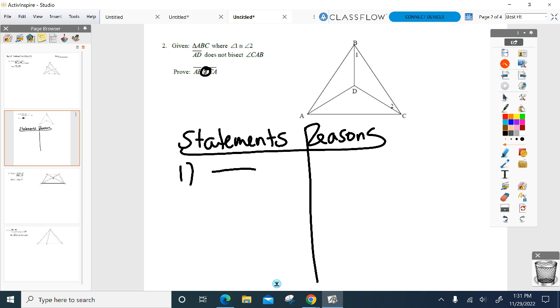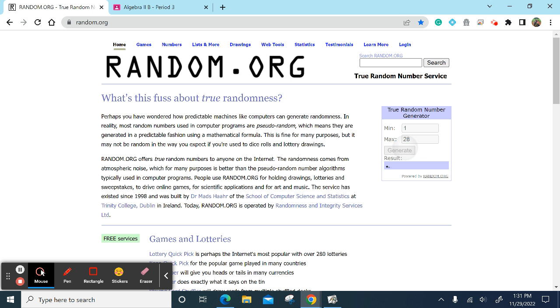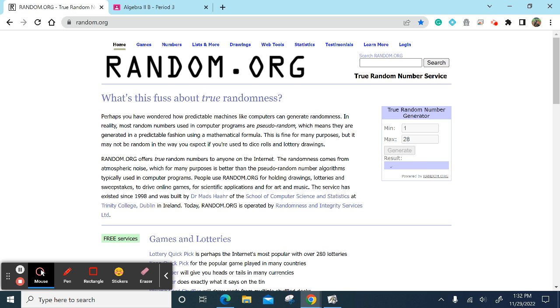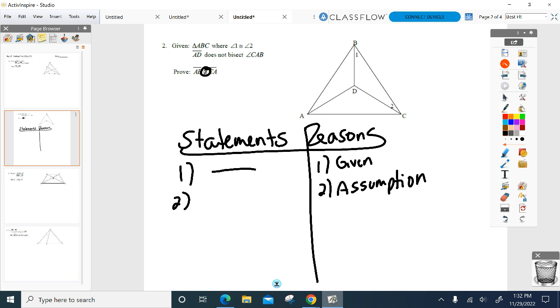So after I write my givens, I know that I need to show that an assumption is true. And this is the first part I worry about, is where you get this assumption. Because as some of you may think, it comes from the givens, but it does not. Your assumption does not come from the given. Where does your assumption come from? What are you going to assume is true? The prove statement. The opposite of it, right? So I'm going to assume that AB is congruent to CA. And I'm going to use that as a given.